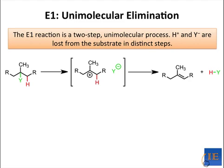E1 is a common mechanism of elimination when base is absent or only weak base is present. Like SN1, it is a stepwise process in which ionization of the substrate — or loss of the leaving group to form a carbocation — is the slow, rate-limiting step.